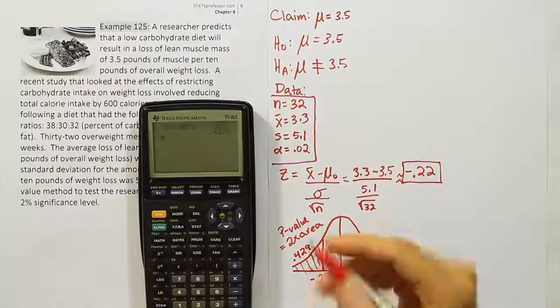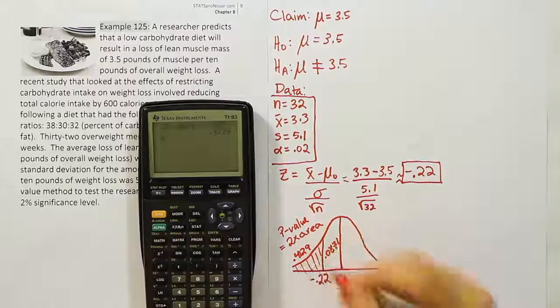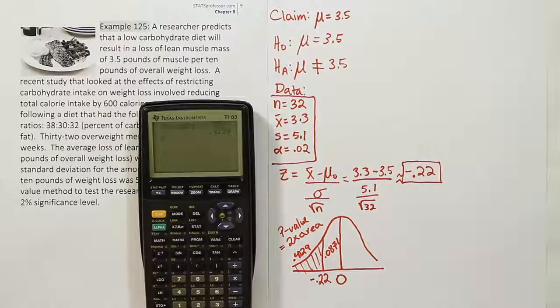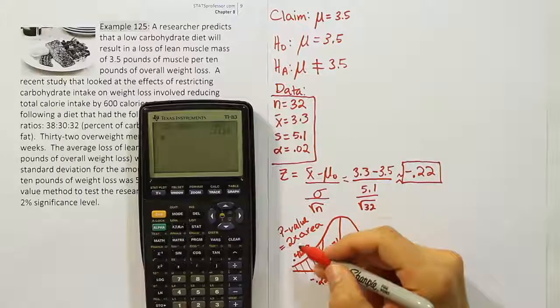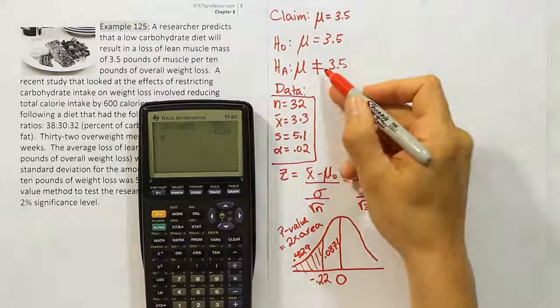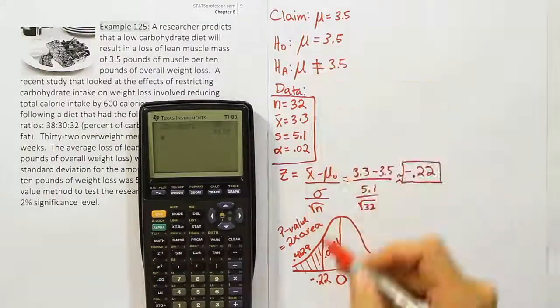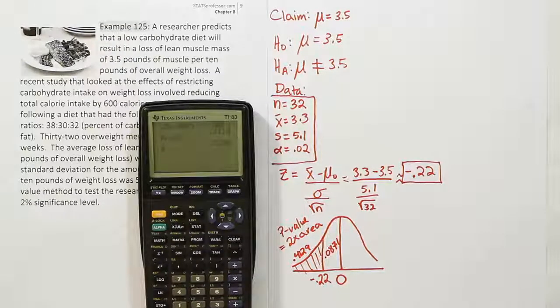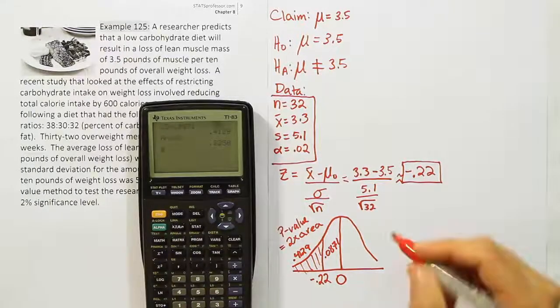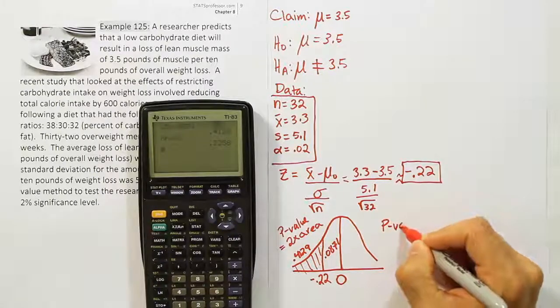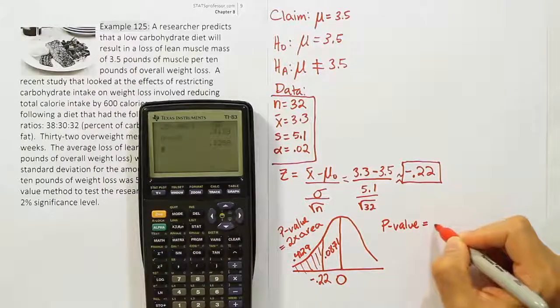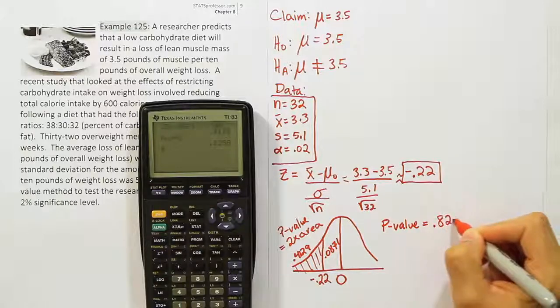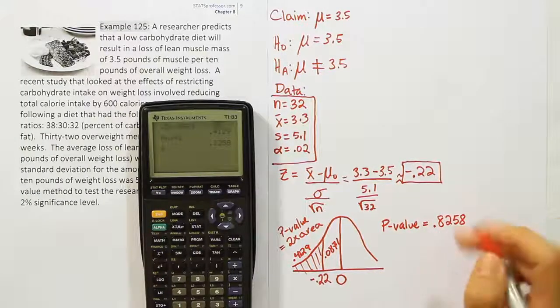Keep in mind that 0.4129 is just the area for the tail. We need to double it to get our p-value because it's a two-tailed test. Don't forget when this is not equal to, you must double that answer. So times 2 produces 0.8258. The p-value is 0.8258. That is a really large p-value.